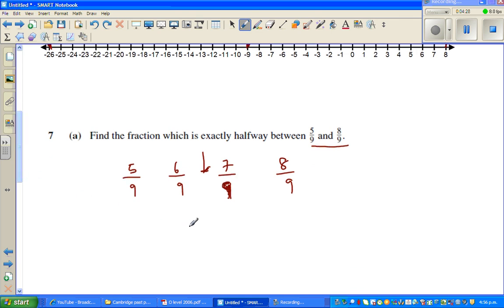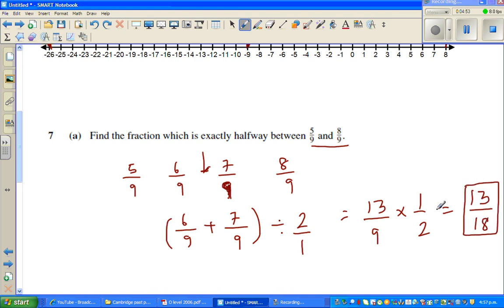Here you can go like this: so that is 6/9 plus 7/9 divided by 2, which is 13/9. So this is 2 over 1 times 1/2, which is 13/18.